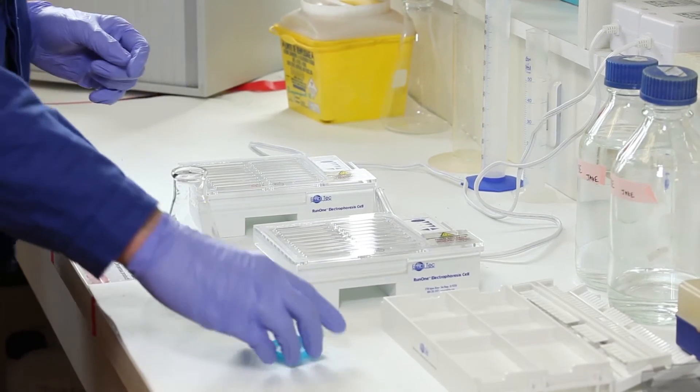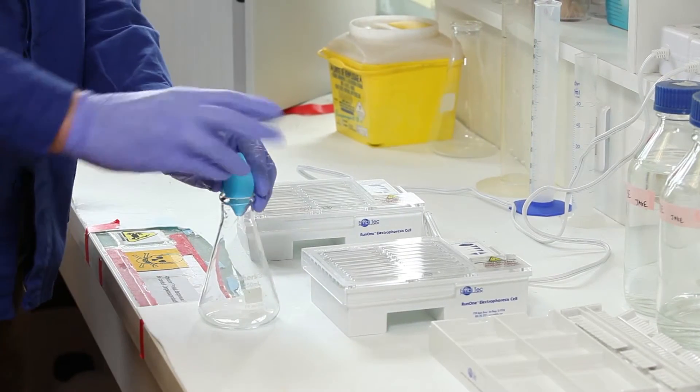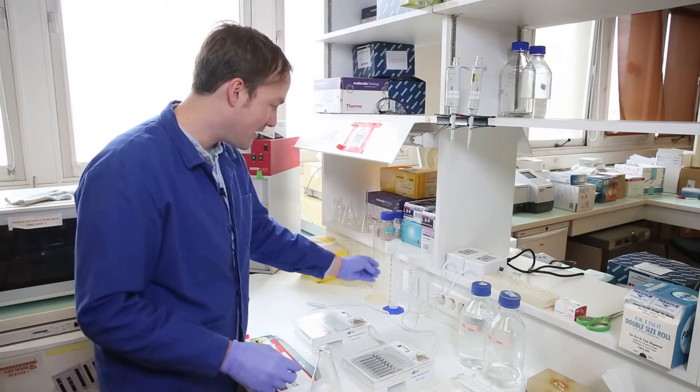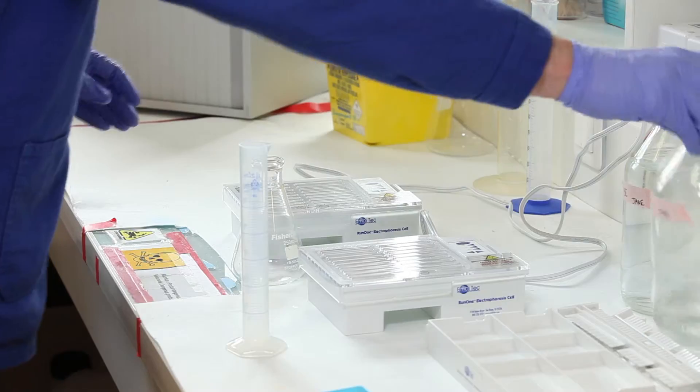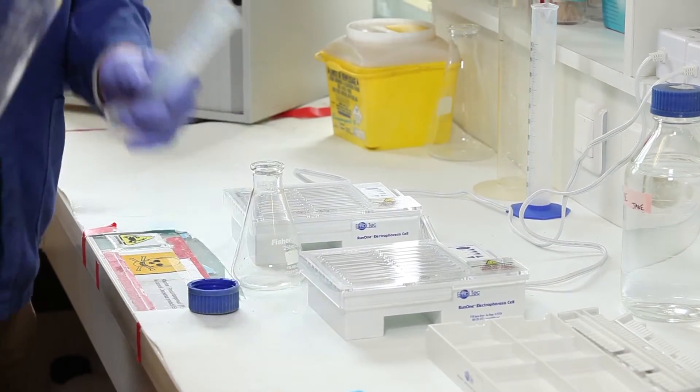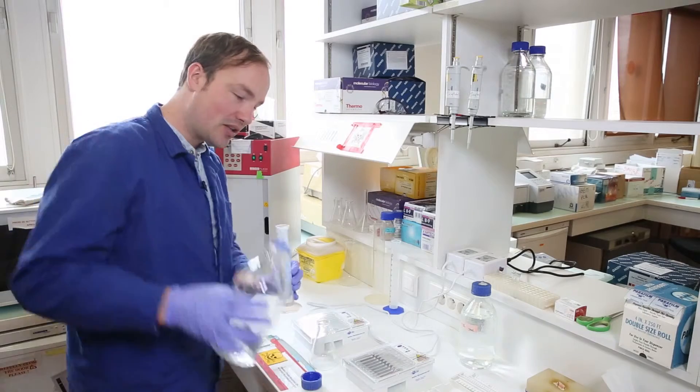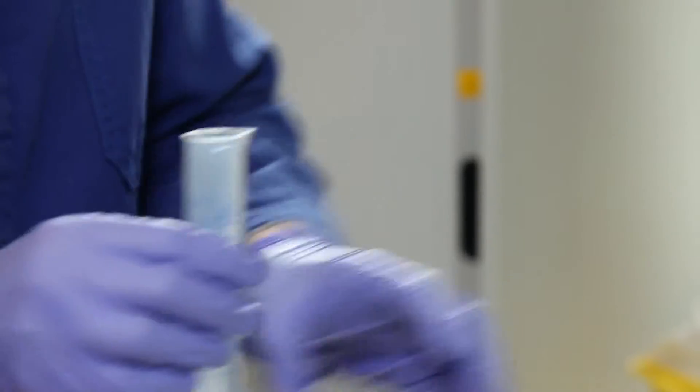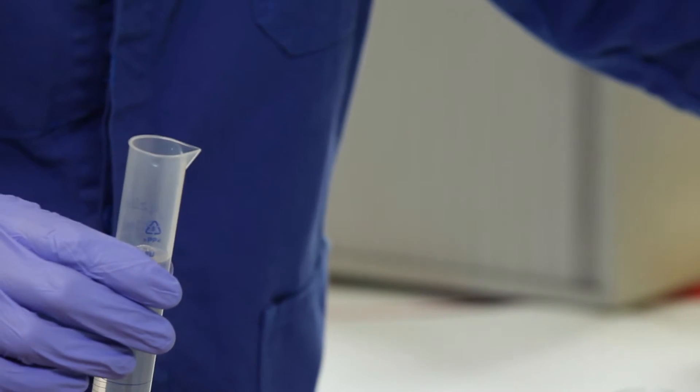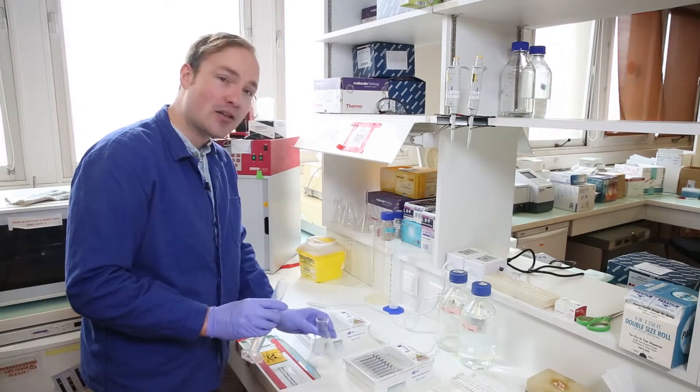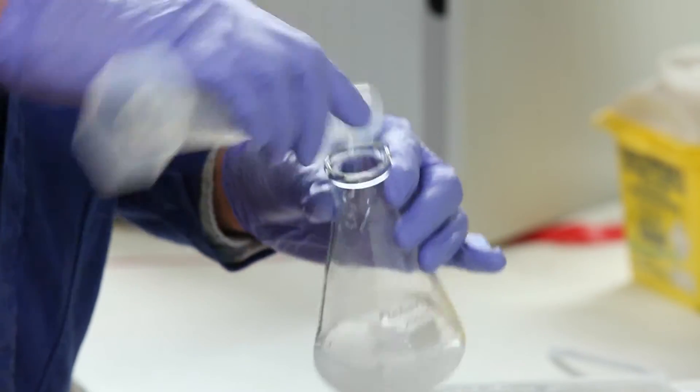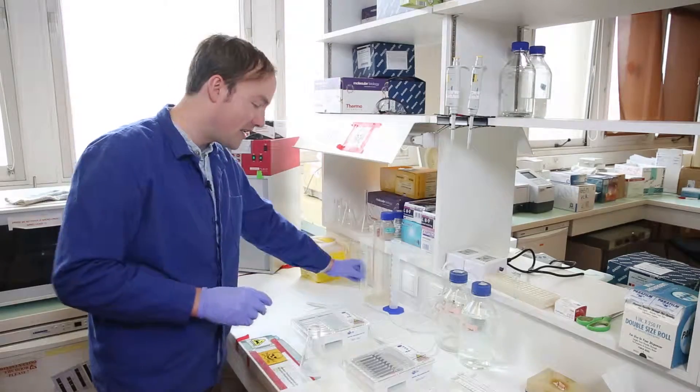While we're waiting for our restriction digest to go to completion, we have an opportunity to prepare the agarose gel that is going to allow us to separate and visualize our DNA fragments. This will be a 1% agarose gel by weight, so I've got half a gram of agarose, and to that I am adding 50 milliliters of TBE buffer. So TBE stands for tris boric acid EDTA. It serves three functions: first it's a pH buffer, so DNA is most stable at a neutral pH; second, it's got EDTA which is a magnesium chelator, which means that any stray restriction enzymes or DNases that find their way into the gel won't be able to function because they require magnesium to function and the EDTA robs them of magnesium.